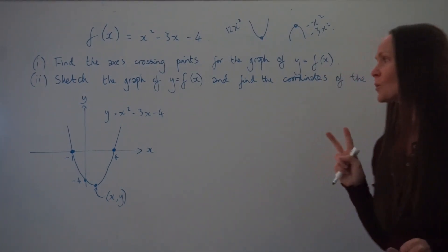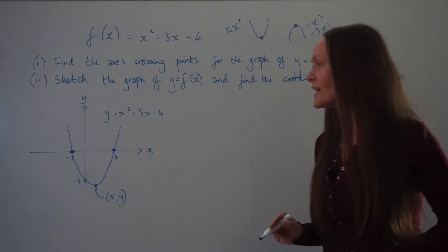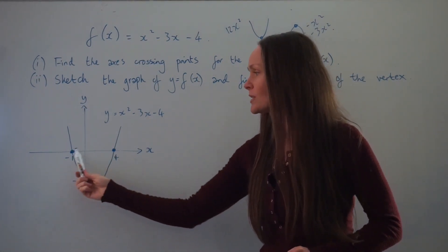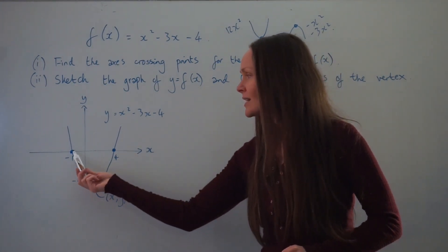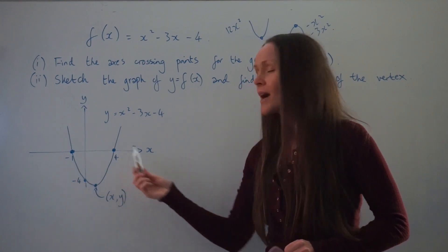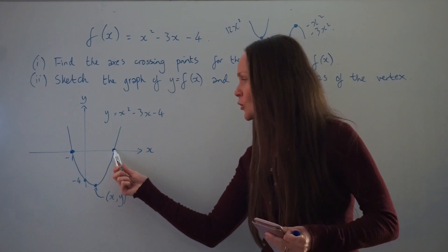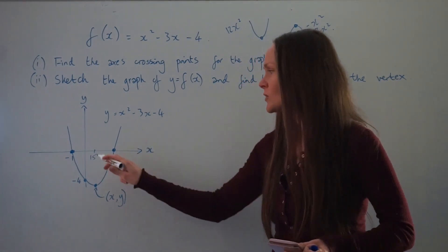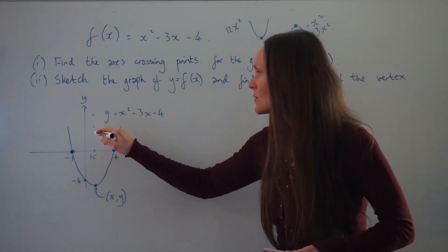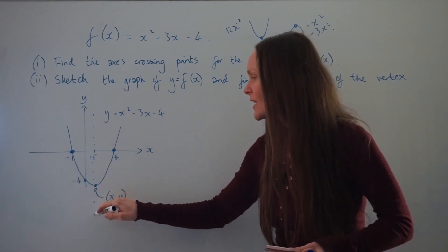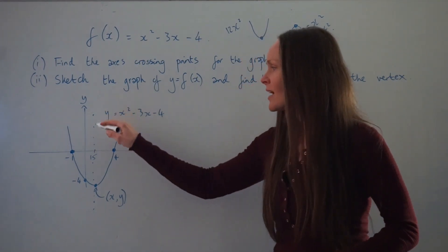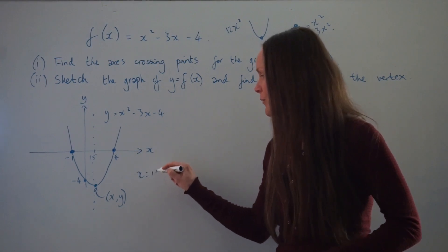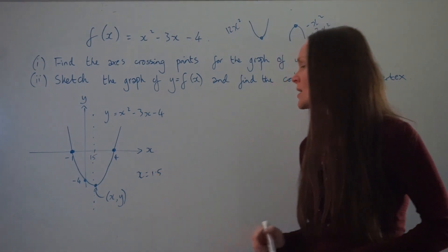I'm going to show you two methods to find the coordinates of the vertex. Method 1 is to find the line of symmetry of the parabola, which is always halfway between the x-axis intersection points. There are 5 units between -1 and 4, and half of 5 is 2.5. Subtracting 2.5 from 4 gives 1.5. So the line of symmetry is x = 1.5, which means the x-value of the vertex is 1.5.